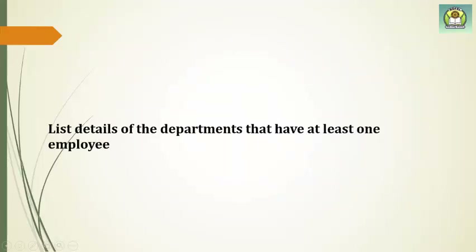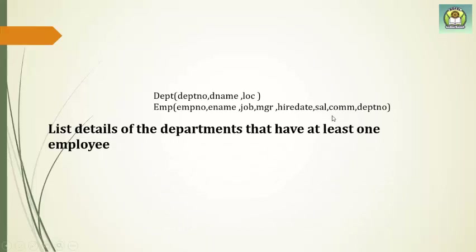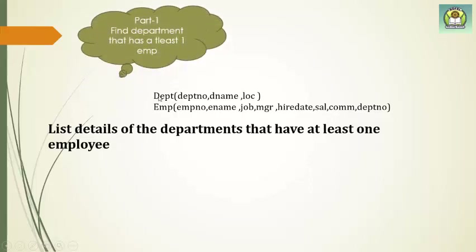Next query: list details of departments that have at least one employee. Once again there are two parts, and the tables are the department table and EMP table. First part: find the department numbers that have at least one employee. The query is simply SELECT department number FROM EMP. If a department number does not exist in the EMP table, it means no employee is working in that department.